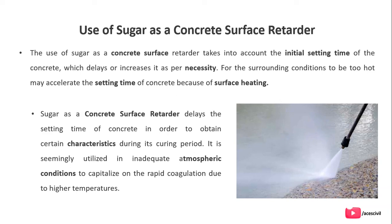The use of sugar as a concrete surface retarder takes into account the final and initial setting time of the concrete, which it delays or increases as per necessity. For surrounding conditions that are too hot, it may accelerate the setting time of concrete due to surface heating. Sugar as a concrete surface retarder delays the setting time of concrete to obtain certain characteristics during the curing period, and is utilized in adequate atmospheric conditions to capitalize on rapid coagulation due to higher temperatures.